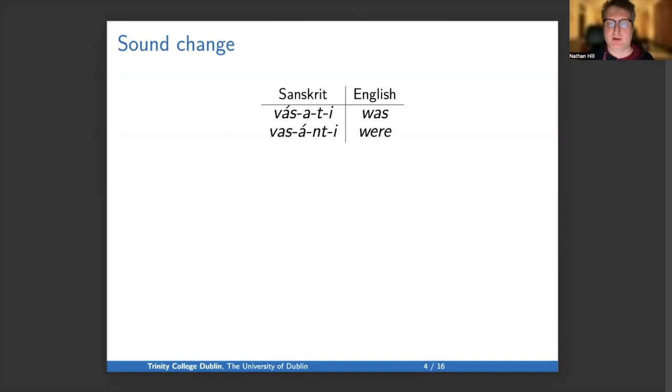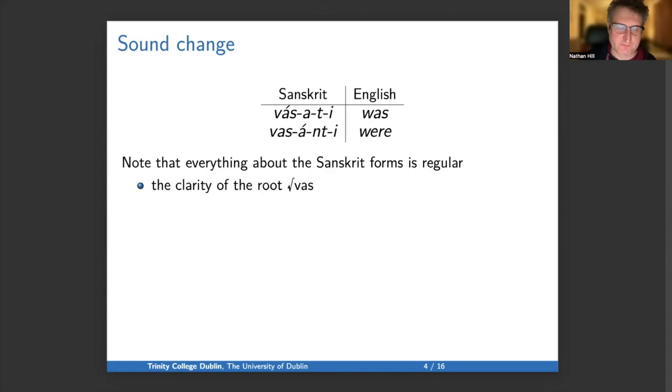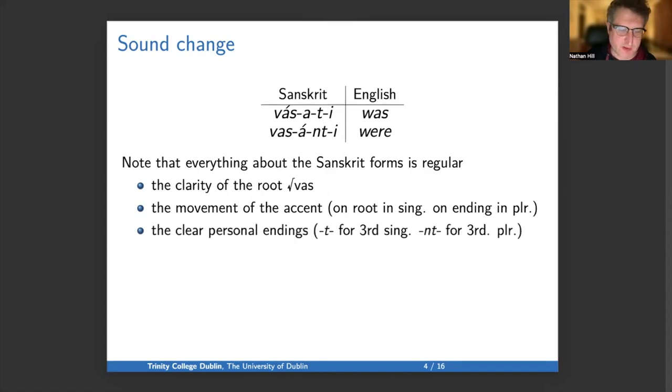Returning to an example I discussed in a previous presentation, we have English was and were cognate with vasati and vasanti in Sanskrit. Everything about the Sanskrit form is regular. There is clarity of the root vas, movement of the accent on the root in the singular, on the ending in the plural, and clear personal endings: t for the third singular and nt for the third plural. But nothing about the English form is regular, even though it descended from a form that was more or less the same. Regular sound change has obscured that regular morphology.